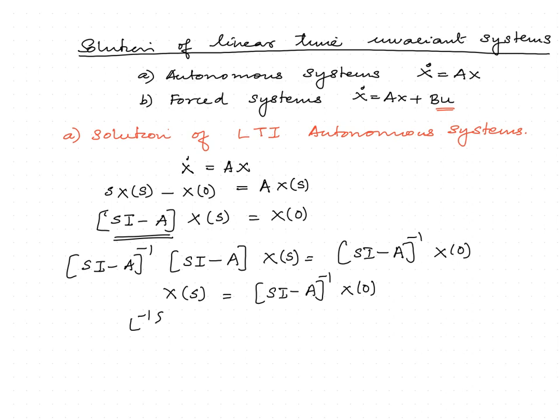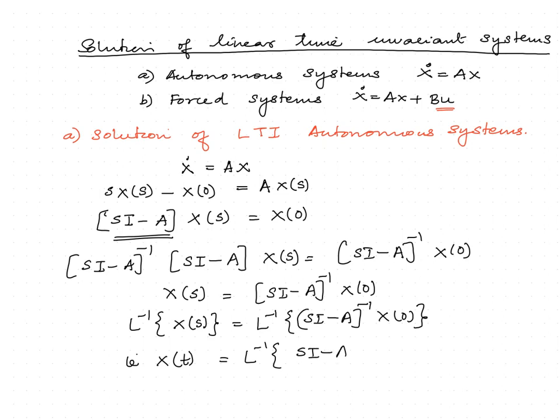x(t) can be obtained by taking the Laplace inverse: x(t) equals the Laplace inverse of (sI minus A) inverse times x(0). Note that x(0) can be written outside the Laplace inverse, or included within the bracket along with (sI minus A) inverse — both are correct. We now have the solution for the LTI autonomous system x-dot equal to Ax.